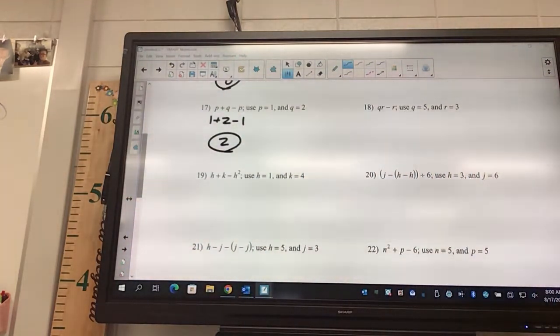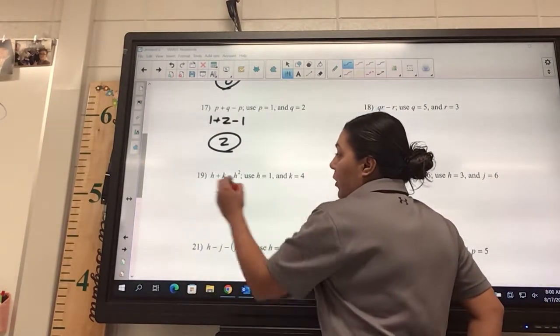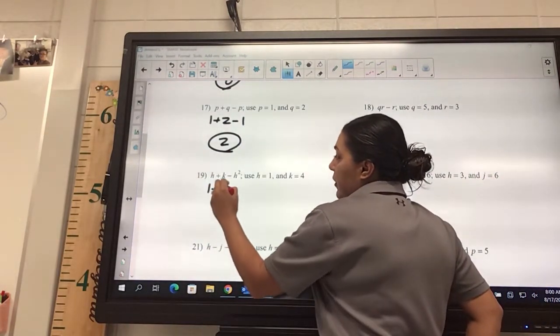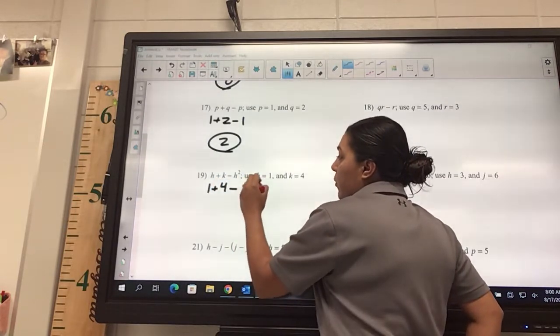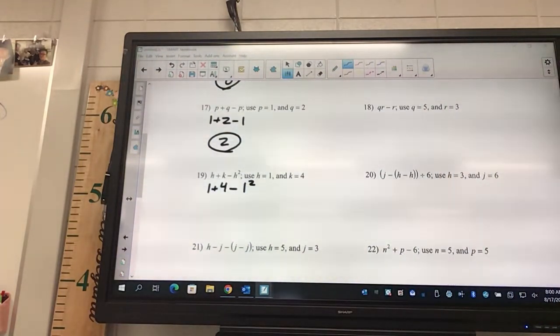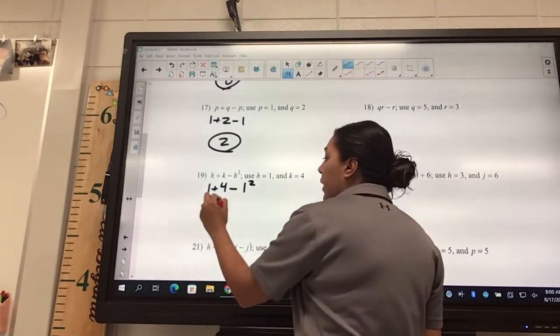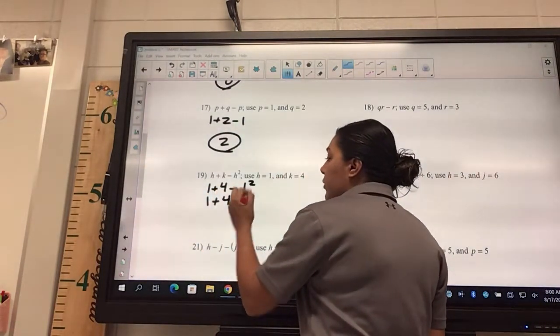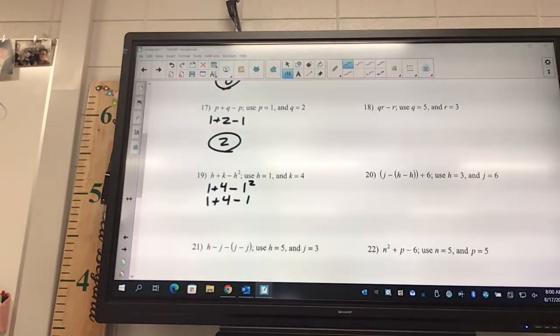Okay, seventeen. We're going to get one plus what? Two. Two minus one. What's one plus two? Three. Three minus one. Two. Perfect. Okay, nineteen. What are we going to start off with? One plus four minus one squared. What needs done first? The exponent. What is one squared? One. So, you're going to get one plus four minus one. What's one plus four? Five. Five minus one. Four. Four. Perfect. Perfect.